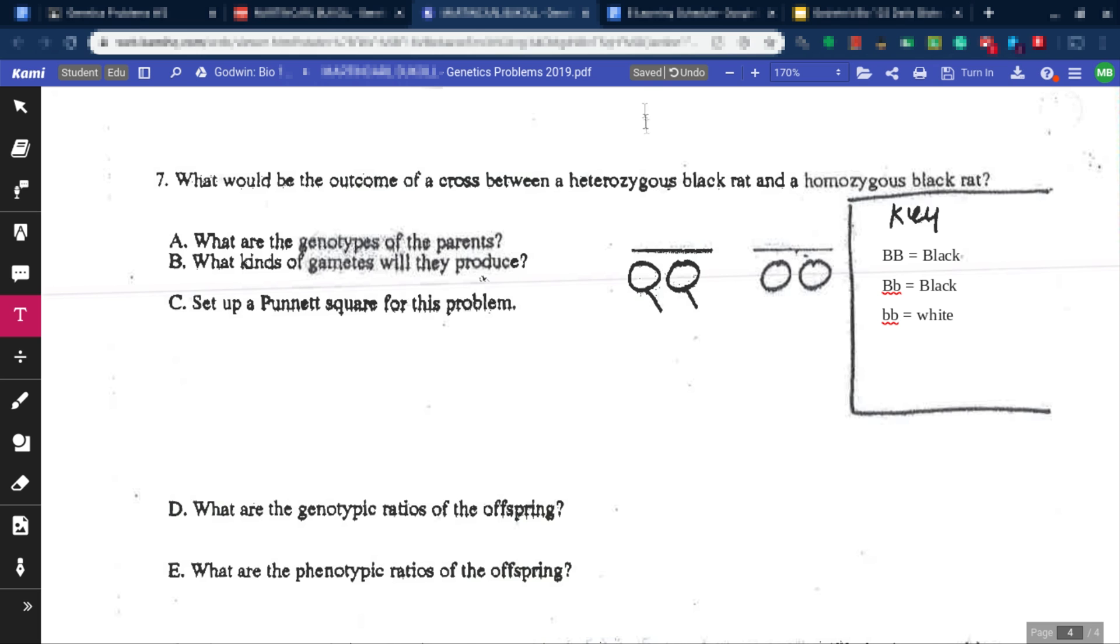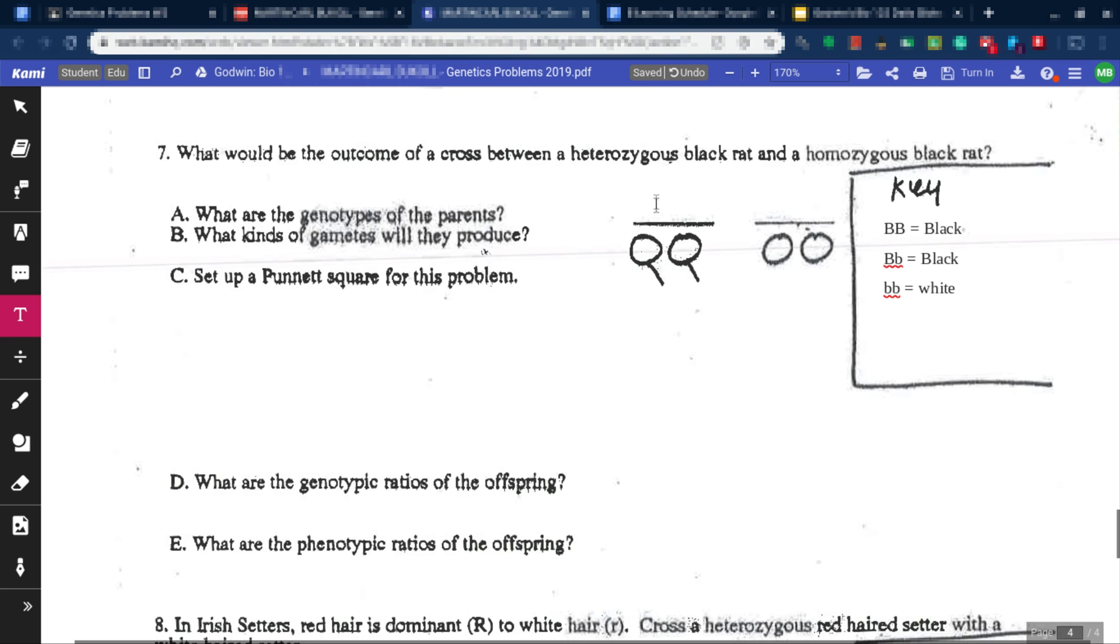And by the way, changes are automatically saved. You guys can see up here. Check the status, make sure you're online and it's saved. Alright, so a heterozygous black rat and a homozygous black rat. So they're both black rats. Heterozygous means the different ones and homozygous means the same ones.